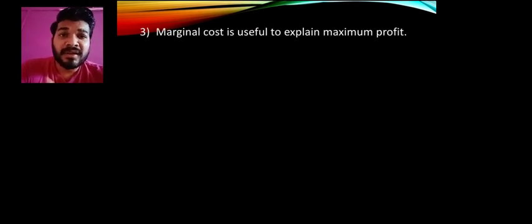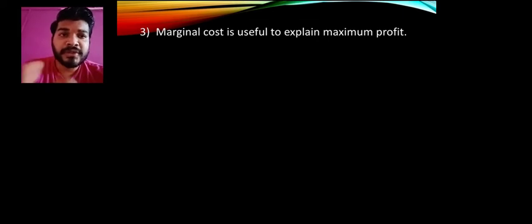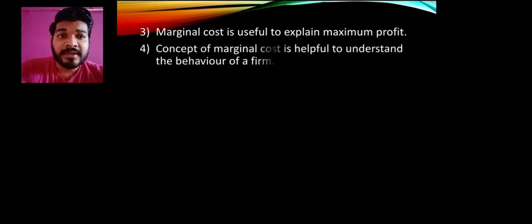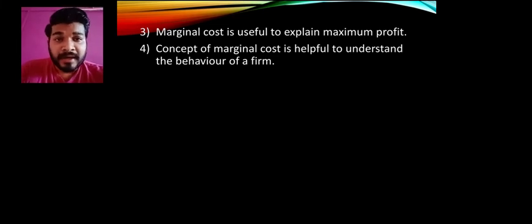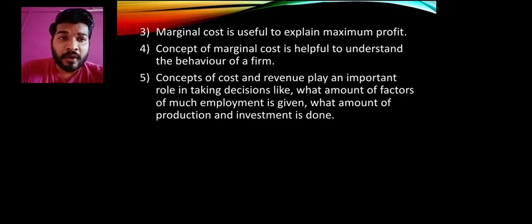Thirdly, in this chapter we are going to learn about marginal cost. In simple words, marginal cost is the cost of producing one additional unit. Suppose we are producing 1000 units; if we produce one more extra unit, the extra cost for it is called marginal cost. For example, after 1000 pens, making one extra pen — how much cost is incurred for that one pen — that is marginal cost. There are different types of marginal cost, such as variable and fixed marginal cost, which help us understand the behavior of the firm.